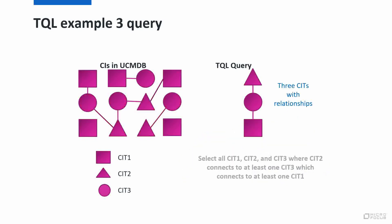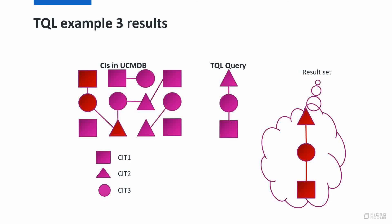Now let's look at a more complicated TQL: a triangle connected to a circle connected to a square. How many do we have in our database? Triangles connected to a circle connected to a square — or more precisely, a triangle connected to at least one circle which is connected to at least one square. There's only one in the database, and that is what we would return. We have other triangles connected to circles but not connected to a square; those would not be returned because we need all three.